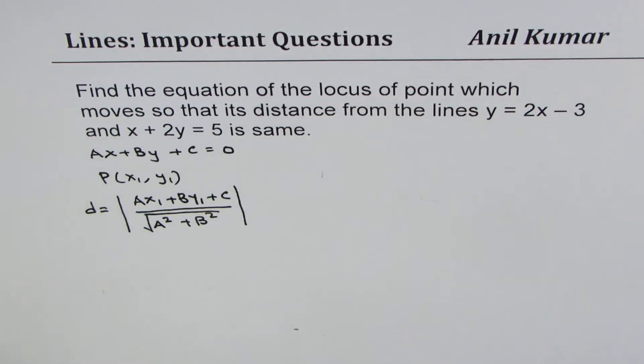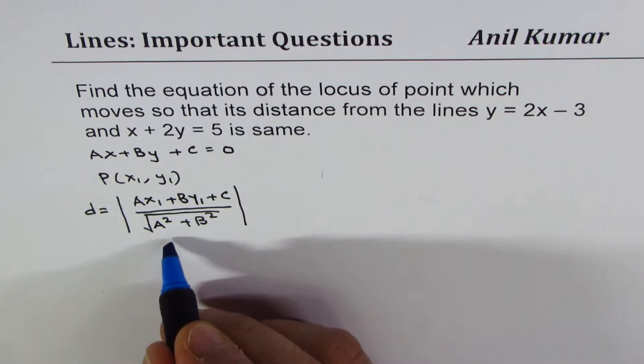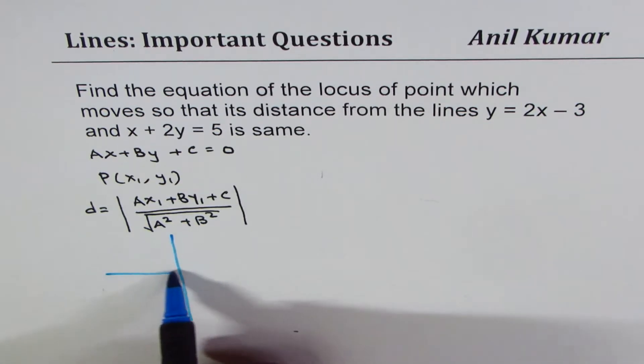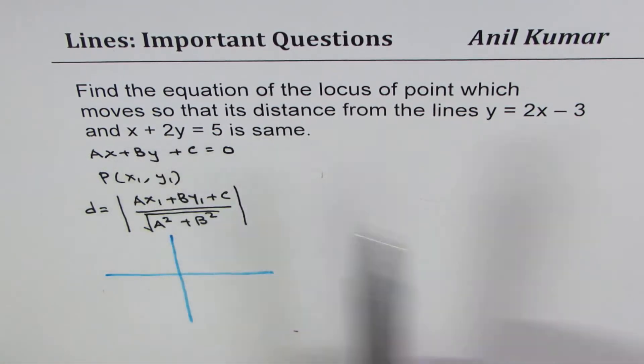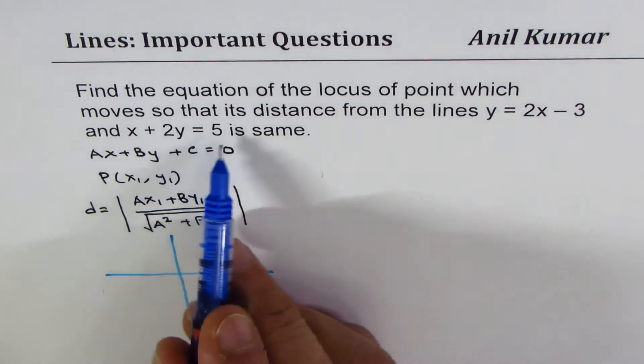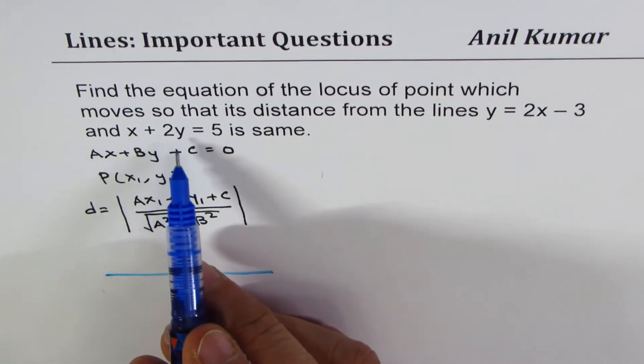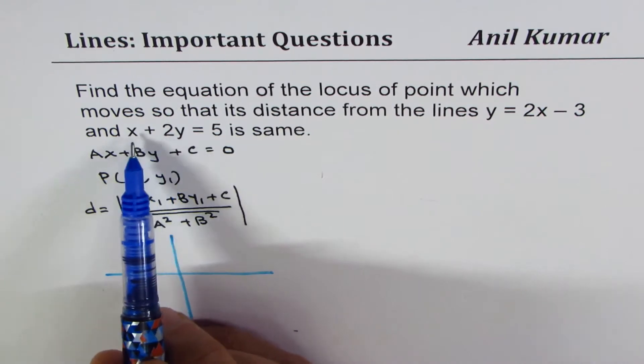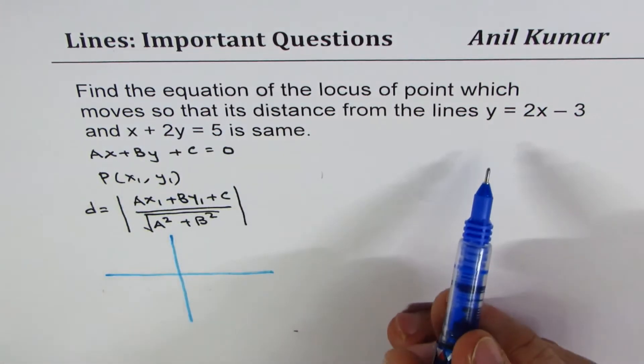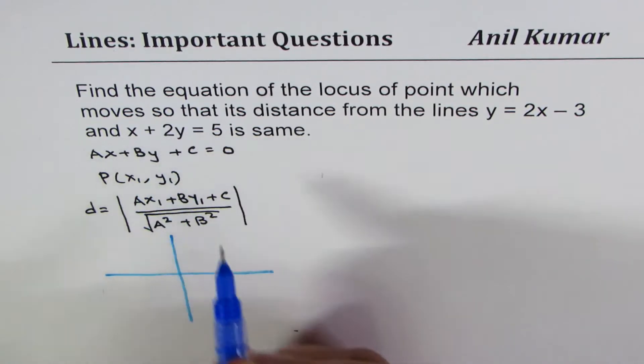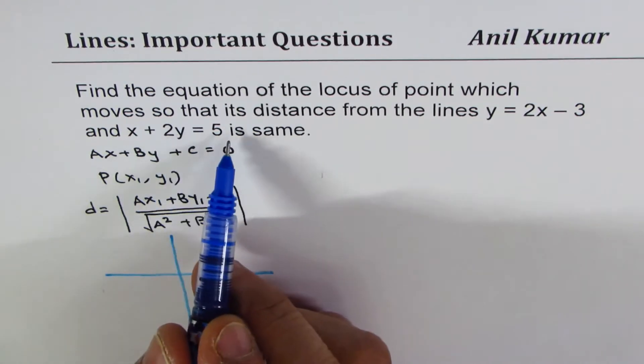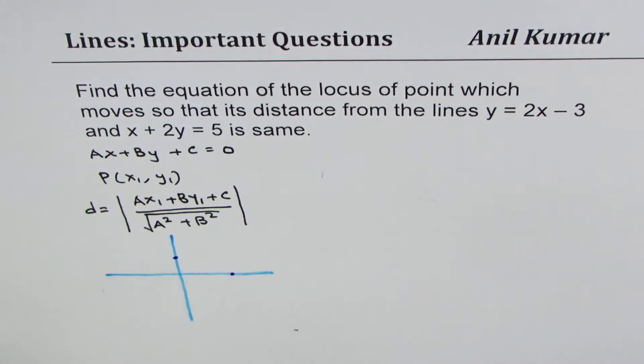Now the question here is, let us sketch these lines and understand the question also. We have y equals 2x minus 3, so let's sketch this line. The other line, let me write in slope-intercept form. We'll sketch with x and y-intercept. Here, x-intercept is 5, y-intercept is 2.5. That gives you a line which is kind of like this.